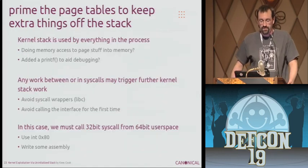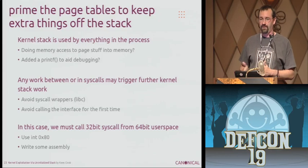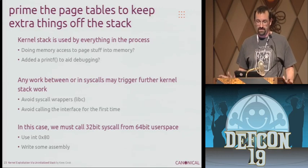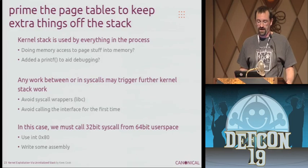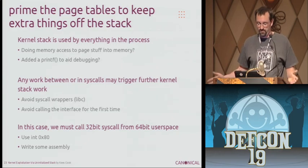The one problem you run into is that you have to call these ioctls in order, because if you do anything else between the two ioctls, you've just used the stack for something else. So you can't use any syscall wrappers like libc's syscall — it's going to go off and do other things with your stack. You have to actually call it directly in assembly. You can't aid debugging by putting a printf between the two because of course you're making yet another syscall in between.